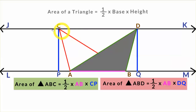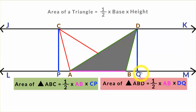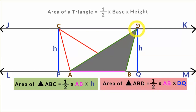Now I want you to take a look at height CP and height DQ. What do you notice? These two heights are the same. Why? Because they are both the perpendicular distance between the parallel lines JK and LM. So CP and DQ are equal. We shall name both CP and DQ as H, since they are the same height. So the area of triangle ABC is half into AB into H, and the area of triangle ABD is also half into AB into H.